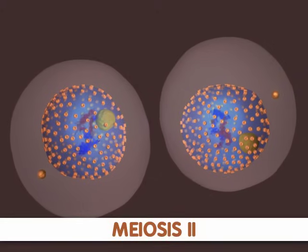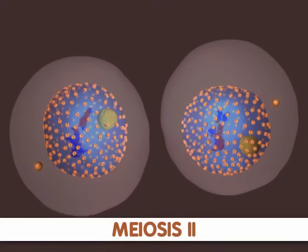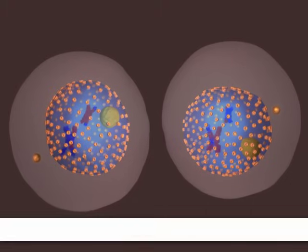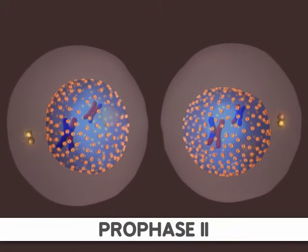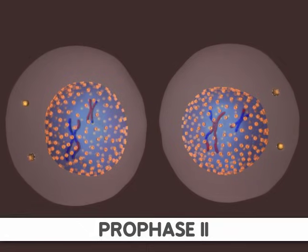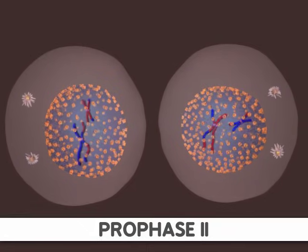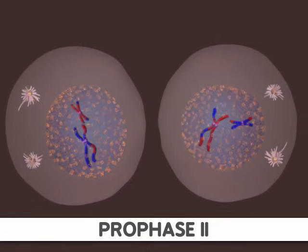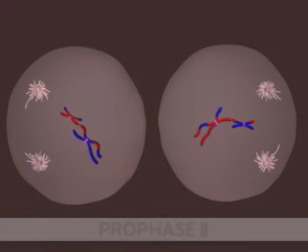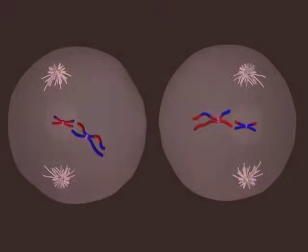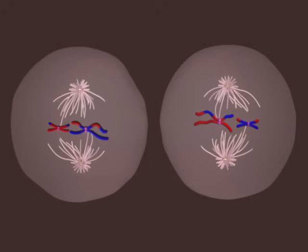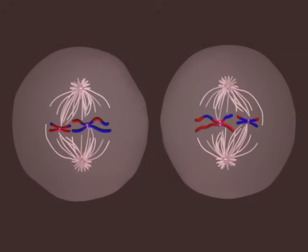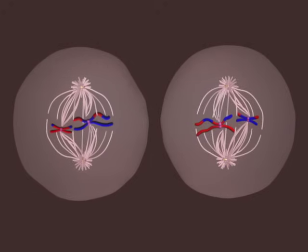Meiosis II is similar to mitosis. The first stage of meiosis II is prophase II. Again, chromosomes condense, the nuclear envelope breaks down, and the spindle apparatus forms. The major difference between prophase II and prophase I is the fact that the daughter cells have only one copy of each homologous chromosome. So in prophase II, there is no synapses of homologous chromosomes or crossing over.